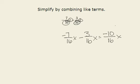Now we can simplify this because both 10 and 16 are divisible by 2. That gives us negative 5 over 8 x. It can be simplified no further, so our final answer is negative 5 eighths x.